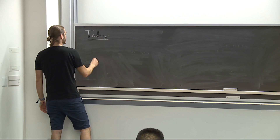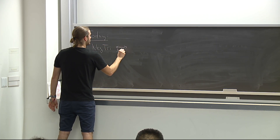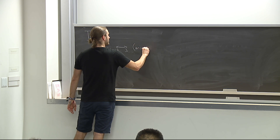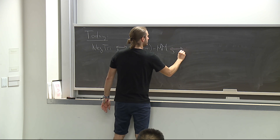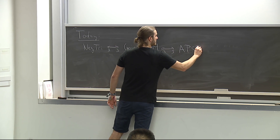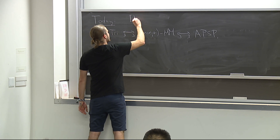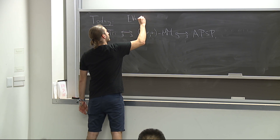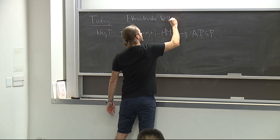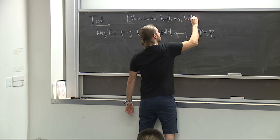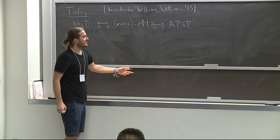Today we write it once explicitly: negative triangle is subcubic equivalent to min-plus matrix multiplication, which is subcubic equivalent to APSP. This is due to Vassilevska-Williams and Williams from 2013.